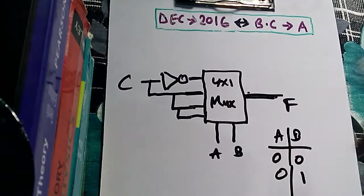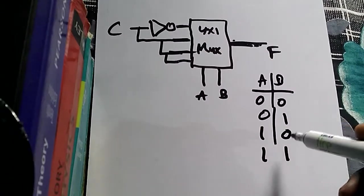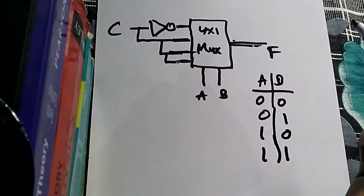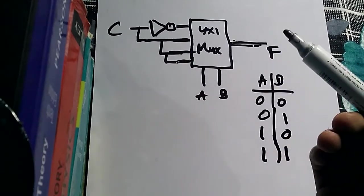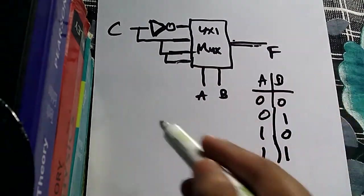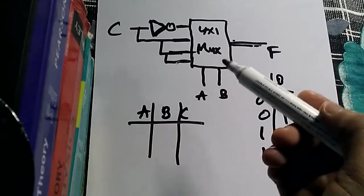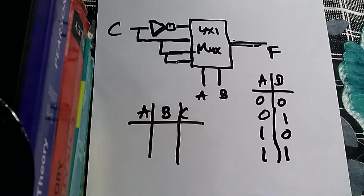Whatever you pass on the first line — zero or one — will be passed to output F. If you pass 01 on A and B, the second line's data reaches F. If you pass 10, the third line reaches the output. When you pass 11, the fourth line's value reaches output F.